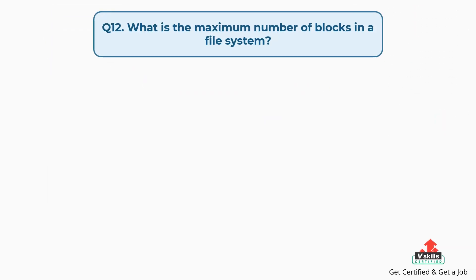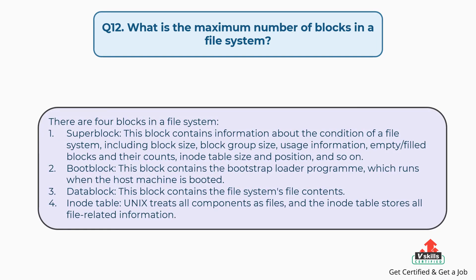Question number twelve: what is the maximum number of blocks in a file system? There are four blocks in a file system. First, superblock — contains information about the file system including block size, block group size, usage information, empty or filled blocks and their counts, inode table size and position, and so on. Second, boot block — contains the bootstrap loader program which runs when the host machine is booted. Third, data block — contains the file system's file contents. Fourth, inode table — stores all file-related information; Unix treats all components as files.